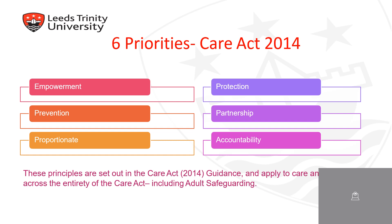Within the Care Act, there are six priorities. These are as mentioned on the slide, and they are all equally important when safeguarding a vulnerable individual. Therefore, they must be followed closely to help protect an adult from harm or abuse.